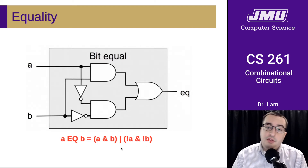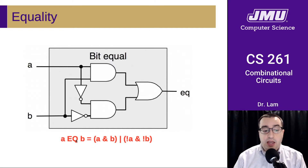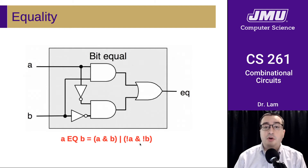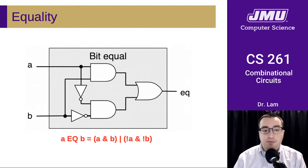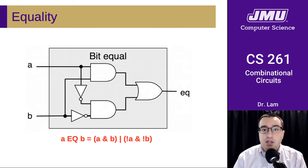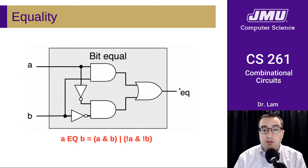This is pretty much the definition of equality. A equals B should be true if they're both true or if they're both false. Otherwise they're not equal. We've essentially encoded those two cases directly in the circuit. This is an output signal that is going to be true if these two things are the same, and false if they're not the same.